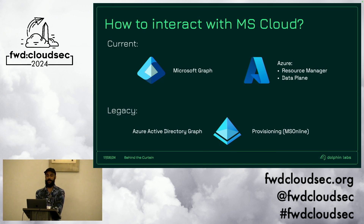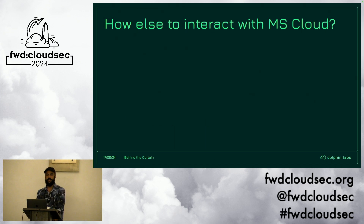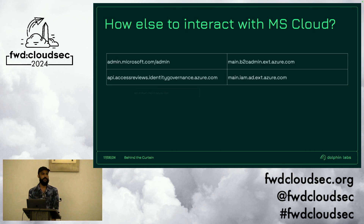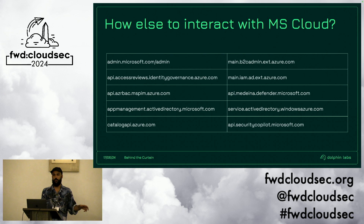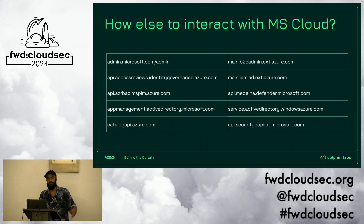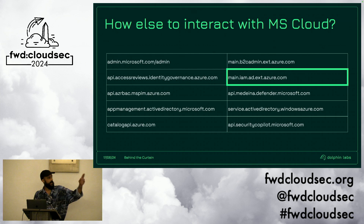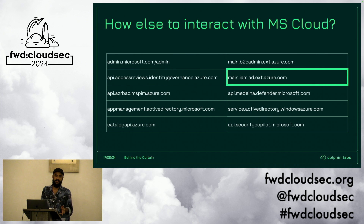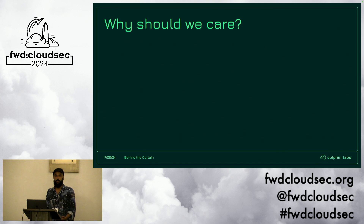But how else can we interact with the Microsoft Cloud? In the initial stage of my research I came across quite a few different ways — and this list is by no means exhaustive. These were just some of the ones where the names indicated more interesting functionality: privileged identity management, identity governance, application management. The one we're focusing on for this talk is main.iam.ad.ext.azure.com — the nicer name is the Ibiza IAM API. Why should we care? What's the security implication of some of these APIs?